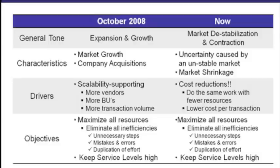Some of the drivers for this were scalability — more vendors to deal with, more business units being brought on, higher transaction volume. For every acquisition made, you potentially double or triple some of your transactional processing. How can you handle that with only incremental sizing of staff? The objectives were: maximize all resources, cut out inefficiencies, make growth strategy as profitable as possible, eliminate errors and duplications of effort, and still keep service levels high. You can't sacrifice customer service just for the sake of headcount.